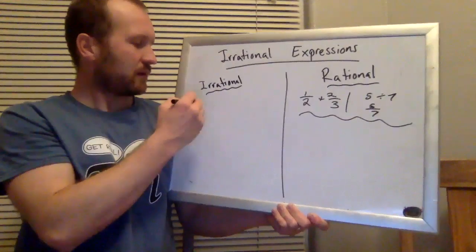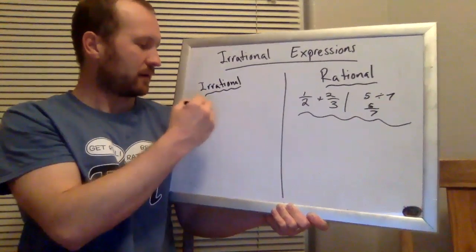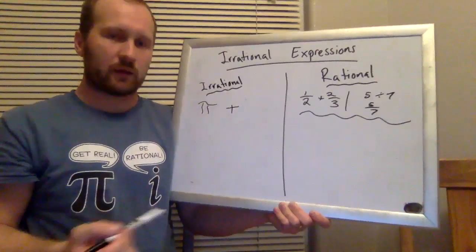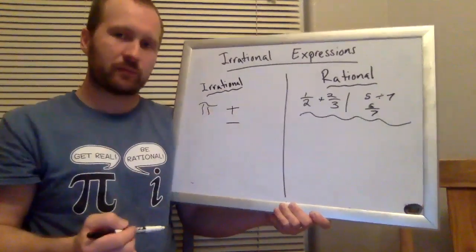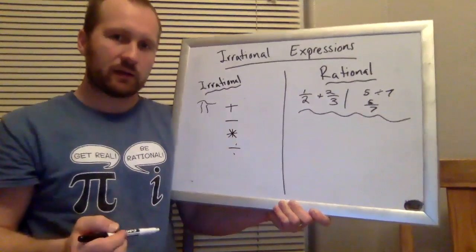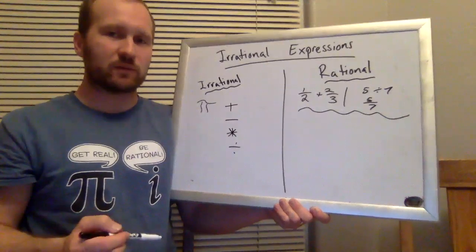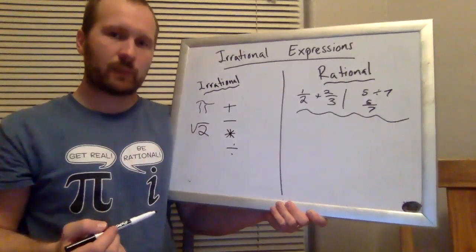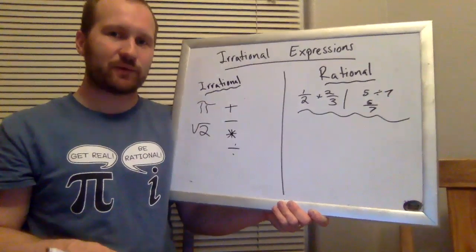Now if we start with an irrational number like let's say pi, it will stay irrational if we add to it, if we subtract from it, if we multiply it times some factor, if we divide it by something. In all of those cases it will stay irrational, same thing with square root of two. Except for a few cases.